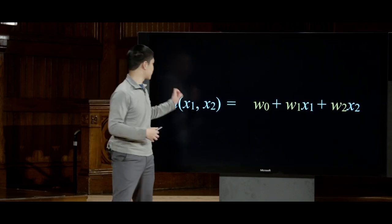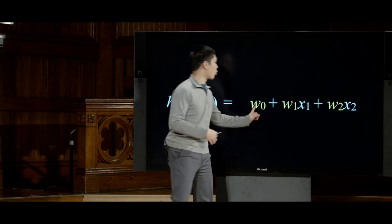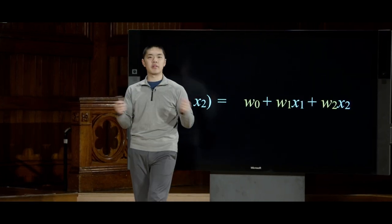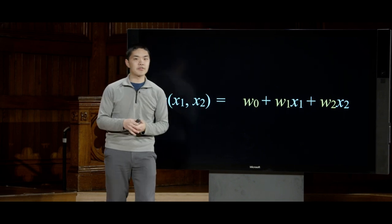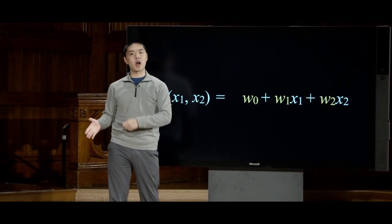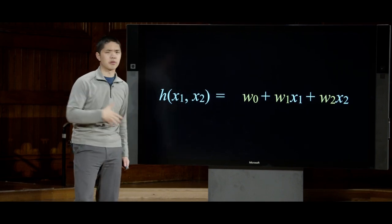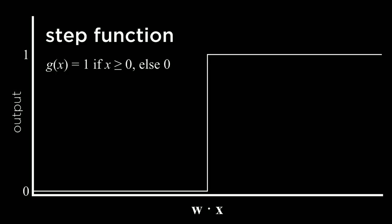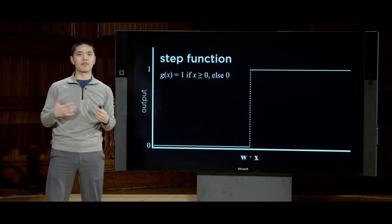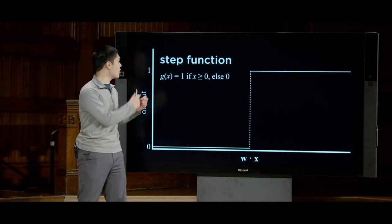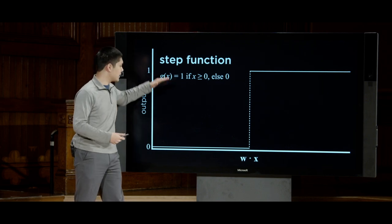To make a classification like rainy or not rainy, we pass the result through an activation function that defines a threshold. The step function outputs 1 if the weighted sum is at least 0, otherwise 0 — it stays at 0 up to a point, then steps up to 1. This is one way to define an activation function: a function that determines when the output becomes active, changing to 1 instead of 0.